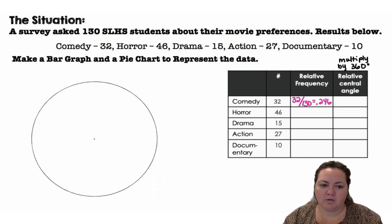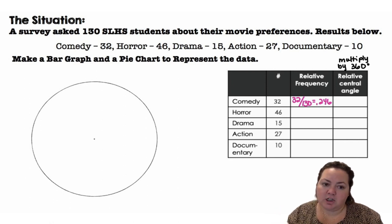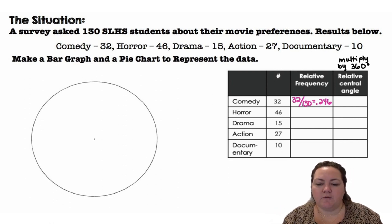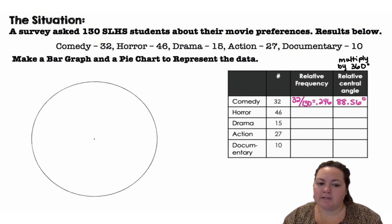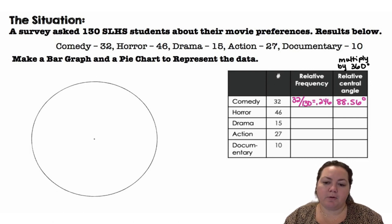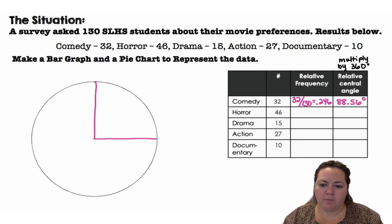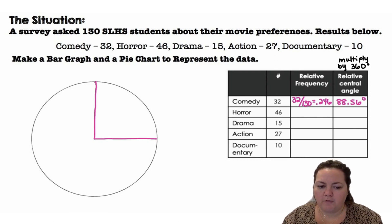I can get the angle of that pie section — that sector — by multiplying 0.246 by 360 degrees, which gives 88.56 degrees. So if I was using a protractor I could be more precise. 24.6% is close to about 25%, so I'm going to take about a quarter of my circle for comedy.